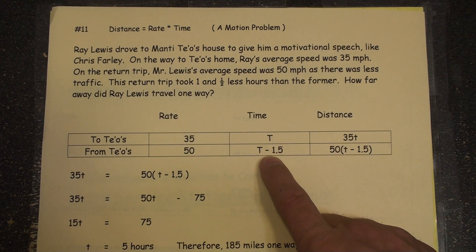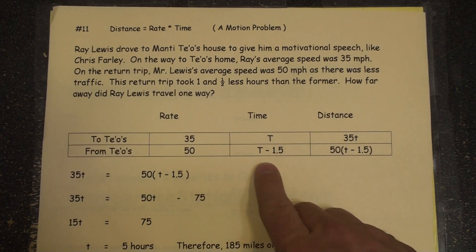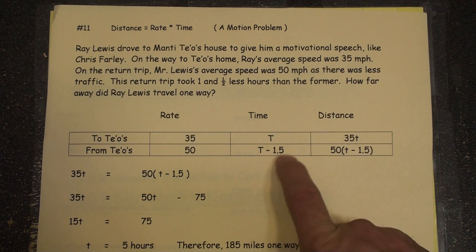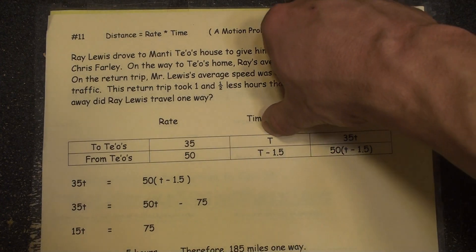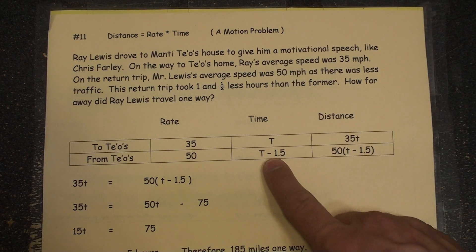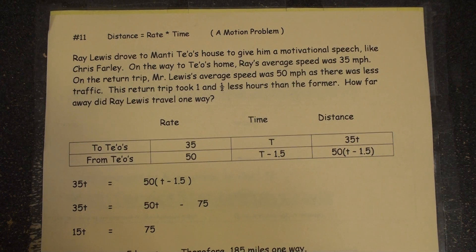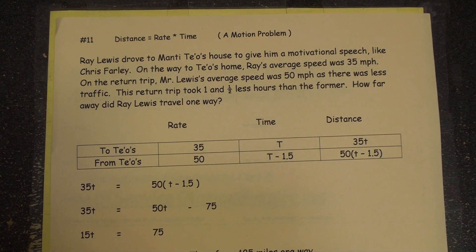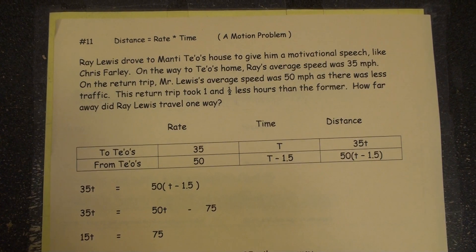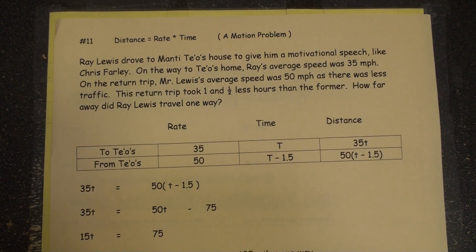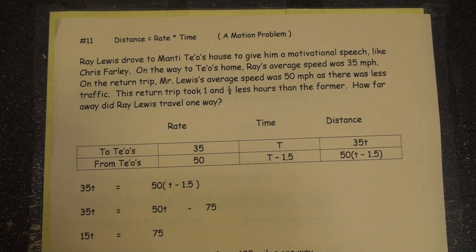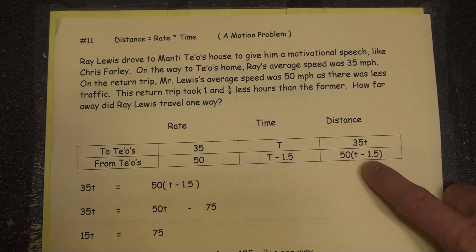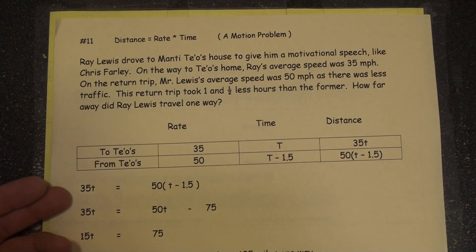The faster trip is going to take less time. You could have called this part T, and then this one would have been T plus 1.5. Either way, from Te'o's home is going to be less time. How do you calculate distance? Rate times time: 35 times T, and 50 times (T minus 1.5). Because the distances are definitely the same, all we have to do is set up an equation setting the two distances equal to each other: 35T equals 50 times the quantity (T minus 1.5).